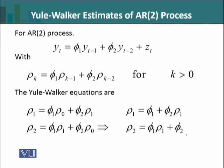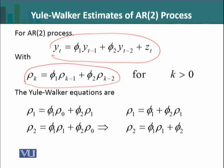For an AR(2) process, we have two parameters phi 1 and phi 2, and we want to obtain the Yule-Walker estimates which will be linked to the process autocorrelations. It will be rho k equals phi 1 rho k minus 1 plus phi 2 rho k minus 2.